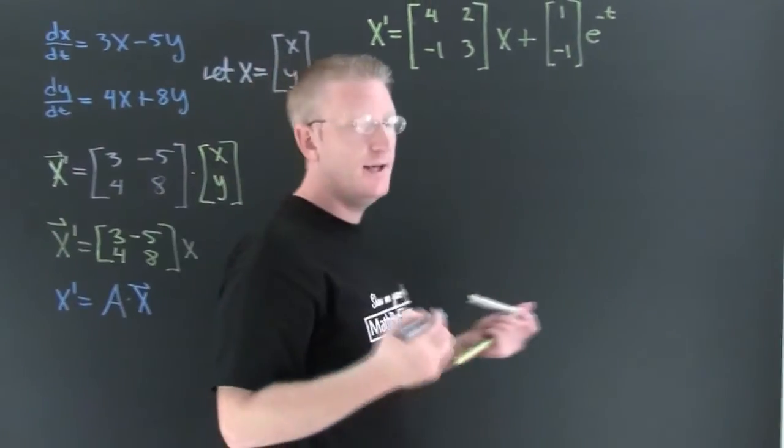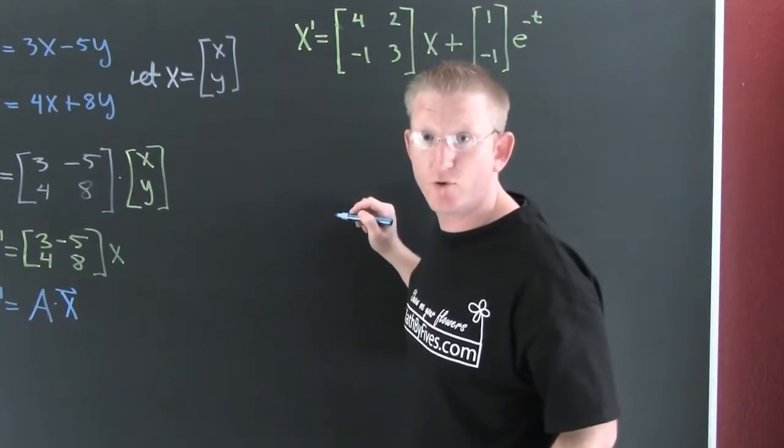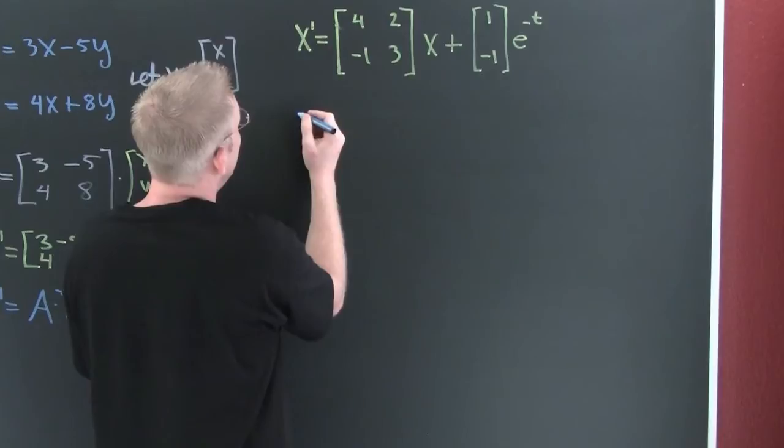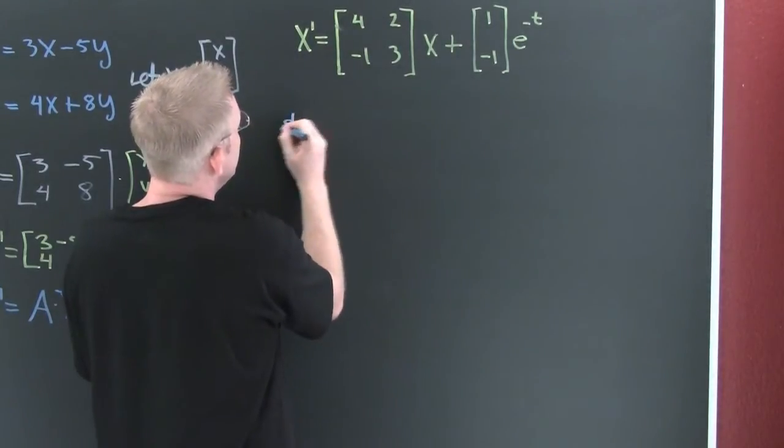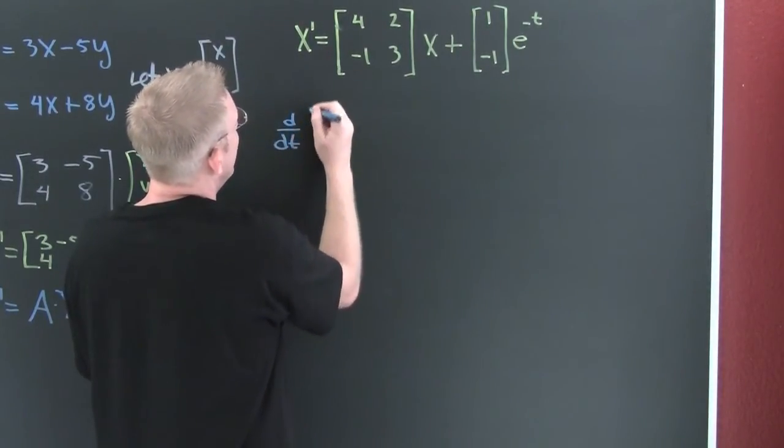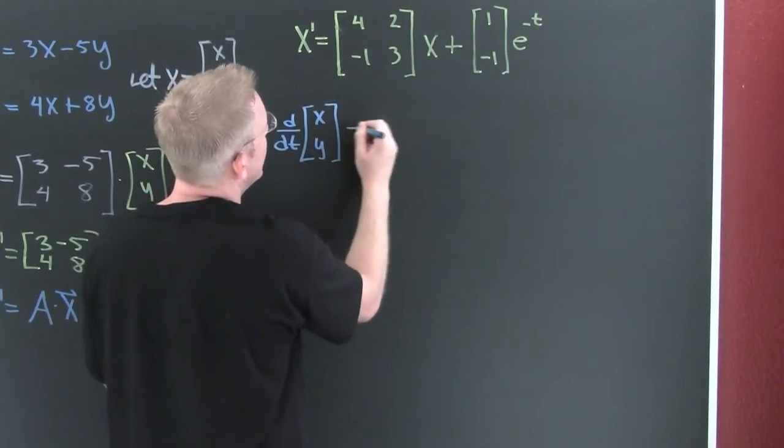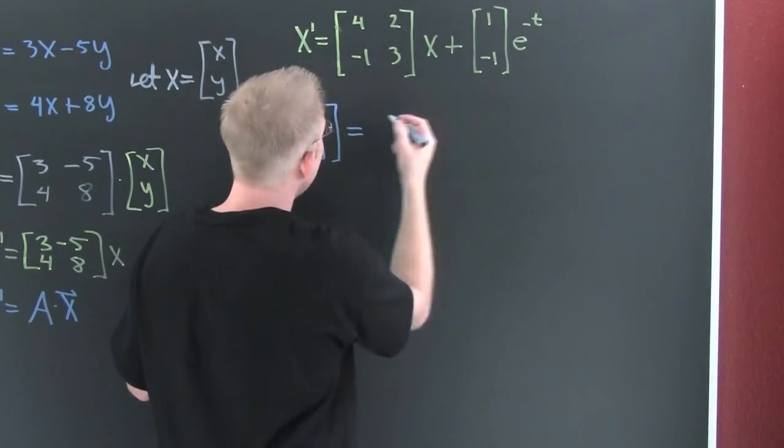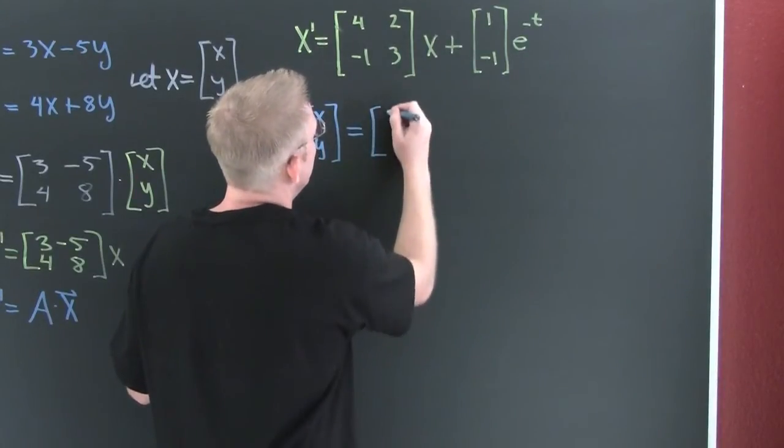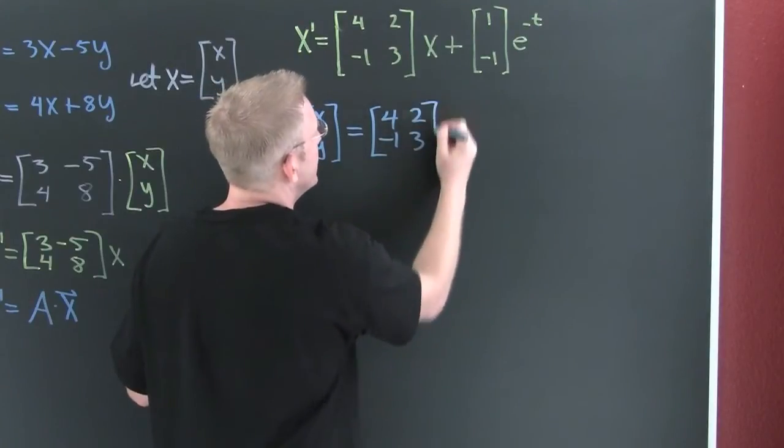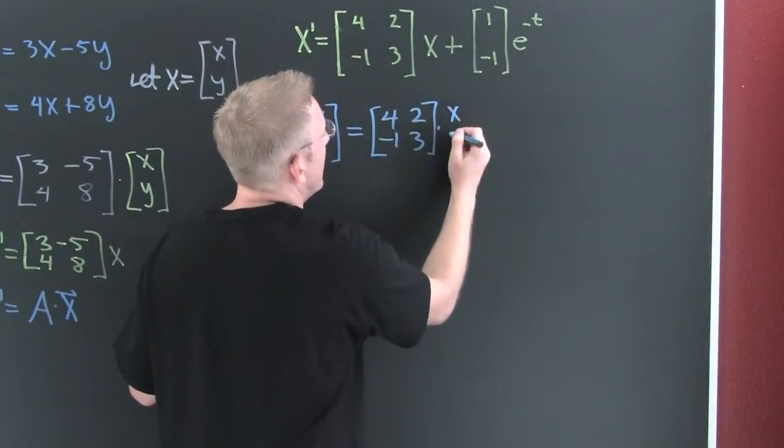Let's come up to this one. Here we have it written in matrix form. Let's transform it back. Here we see this is d/dt of x, y. And then that's going to be equal to, wait for it, 4 minus 1, 2, 3 times our vector.